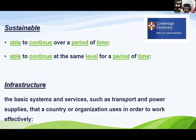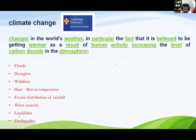Coming to some definitions relating to today's topic: the Cambridge dictionary defines sustainability as the ability to continue at the same level of happiness or performance over a period of time. Infrastructure is basically the systems and services that a country or organization uses to work effectively. Climate change is the change in the world's weather — actually getting warmer as a result of human activity increasing the level of carbon dioxide in the atmosphere.